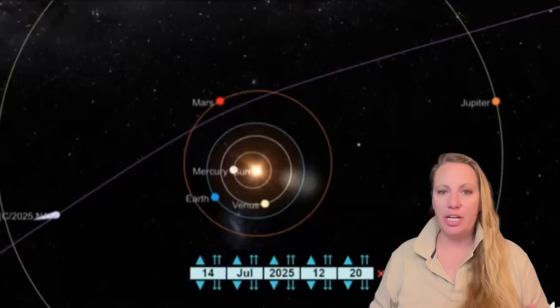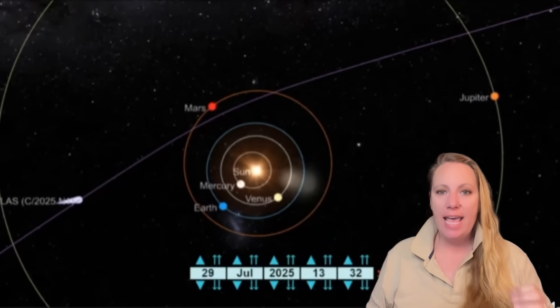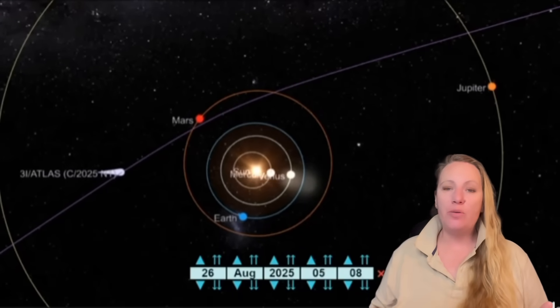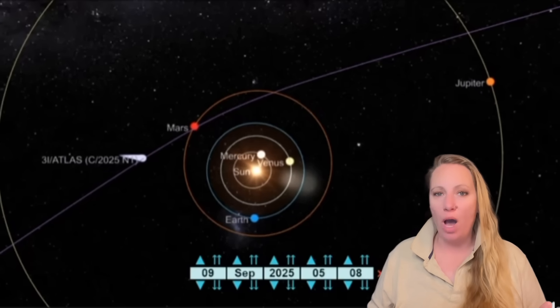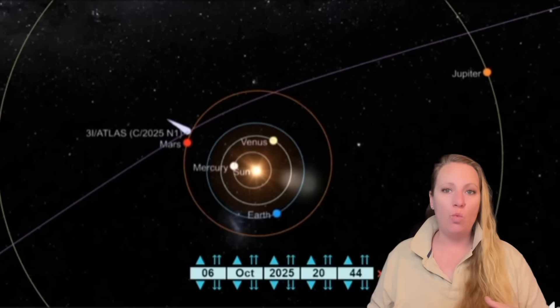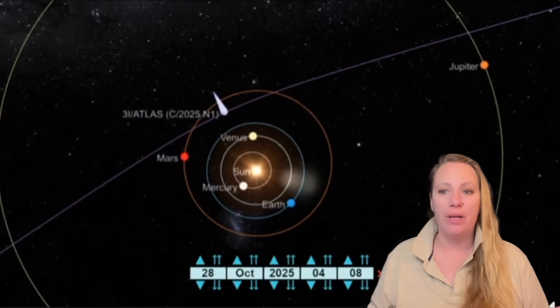Okay guys, it has happened. December 19th, interstellar object 3i Atlas is passing its point closest to Earth and we have watched it for quite a while as it was speeding with high speed through our solar system, way faster than any spacecraft that we have ever built.